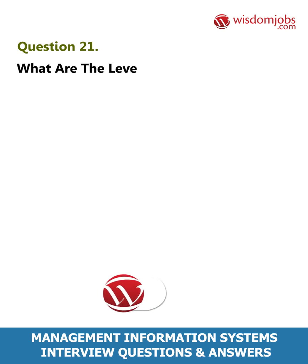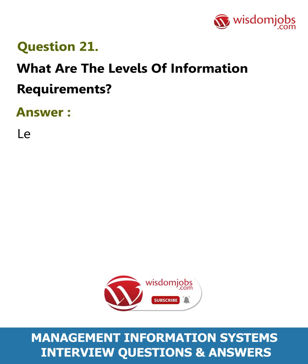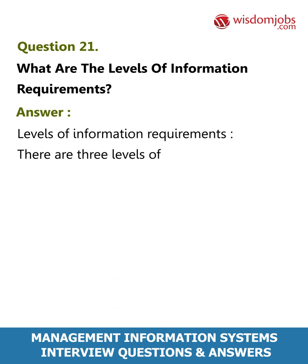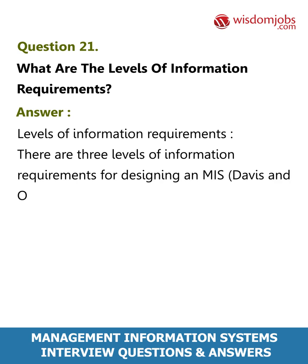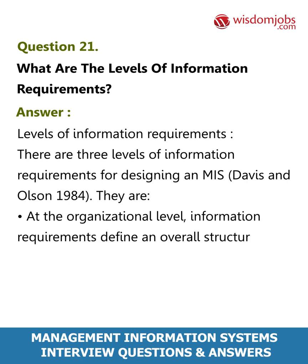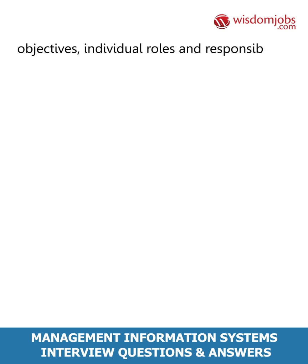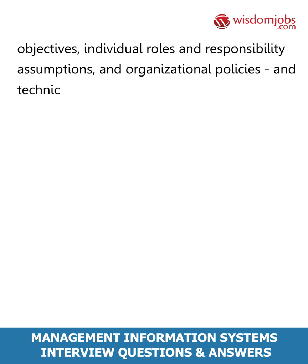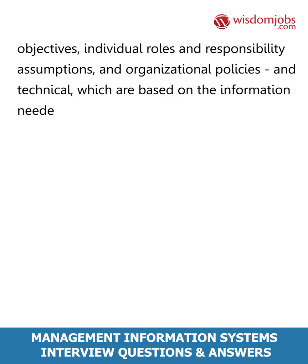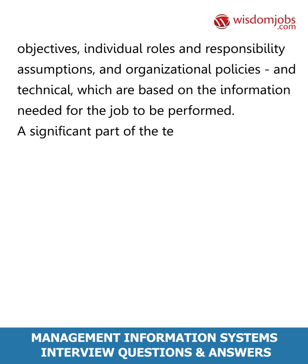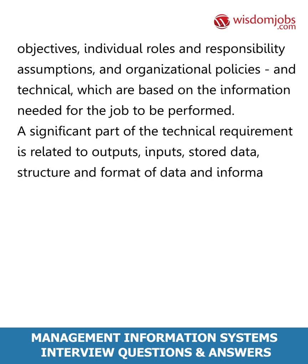Question 21: What are the levels of information requirements? Answer: There are three levels of information requirements for designing an MIS (Davis and Olson, 1984). At the organizational level, information requirements define an overall structure for the information system and specific applications and database. Application level requirements include social or behavioral aspects covering work organization, objectives, individual roles and responsibilities, assumptions, and organizational policies. Technical requirements are based on the information needed for the job, including outputs, inputs, stored data, structure, format of data, information, and data networks.